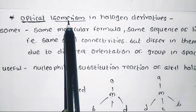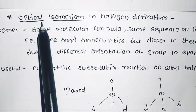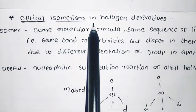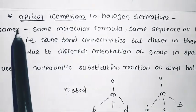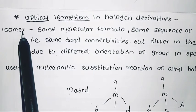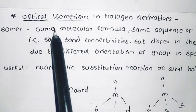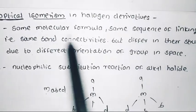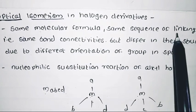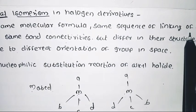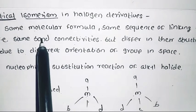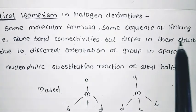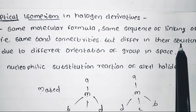This optical isomerism is a type of stereoisomerism. Isomers means same molecular formula, same sequence of linking of atoms — that is, same bond connectivity — but they have different structures.